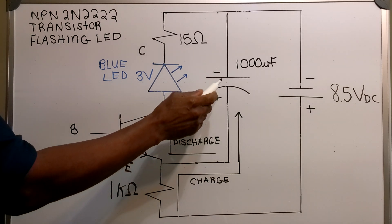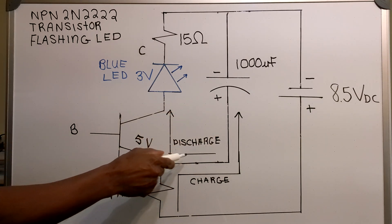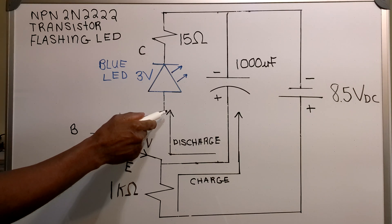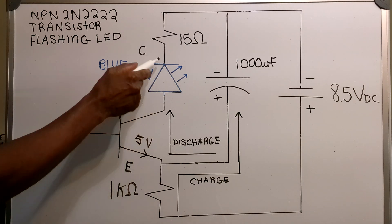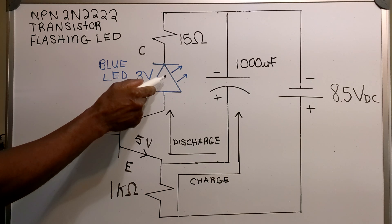The capacitor discharges through the transistor and through the LED. This causes the LED to light.